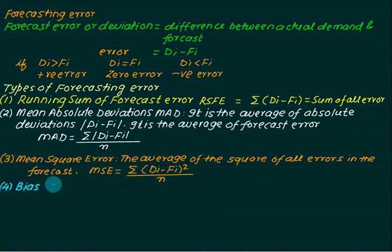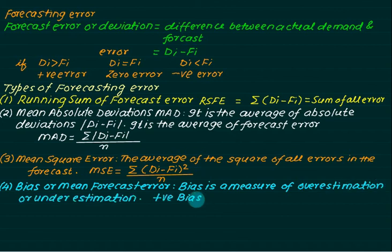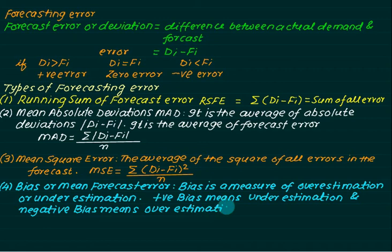The fourth point to calculate is bias, whether the data is on the positive side or negative side. It is also called the mean forecast error. Bias is a measure of overestimation or underestimation. Positive bias means underestimation - the forecast will be less than the demand. Negative bias means the forecast is more than actual demand, or overestimation. Bias is given by sigma of error, Di minus Fi, divided by n.